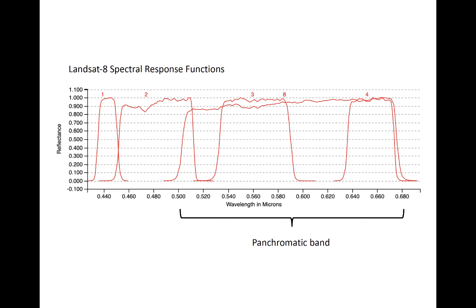To demonstrate what the panchromatic band looks like, spectral response functions for the four narrow visible bands and the panchromatic band on Landsat 8 are shown here. Note how the SRFs for channels 1 through 4 are separated from each other, capturing reflected radiation in different colors — channel 2 is blue, 3 is green, 4 is red. The panchromatic band, however, spans many different colors, running from 503 to 676 nanometers, and includes the entirety of the red and green bands and a small part of the blue band. Therefore, true color imagery cannot be derived from just the panchromatic band.